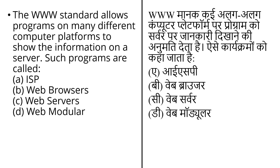Students, this is the last question which you have to answer: the WWW standard allows programs on many different computer platforms to show information on a server, and such programs are called what? The options are: first option (unclear), second option web browsers, third option web servers, and last option web modulars. Please try to answer this question — I am waiting for your answer. Till then, keep learning, keep watching.